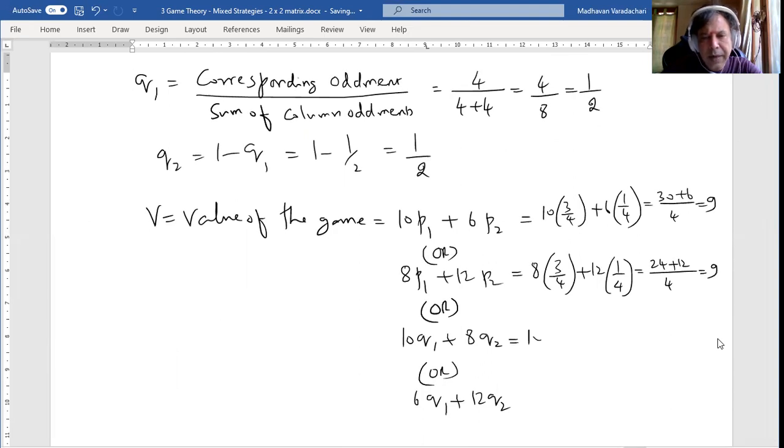Here 10 times Q1 - Q1 is half, Q2 is also half. So this becomes 5 plus 4 which is also 9. Again here, 6 times half plus 12 times half which is 3 plus 6 which is also giving you 9. That means you can use any of the four different expected value functions to find the value of the game.